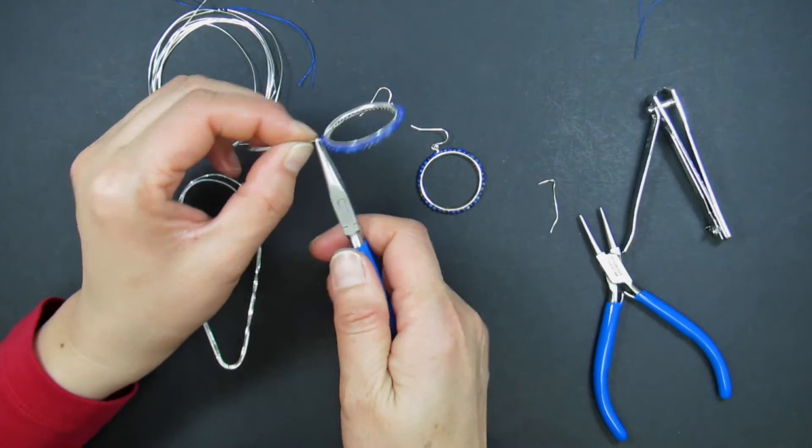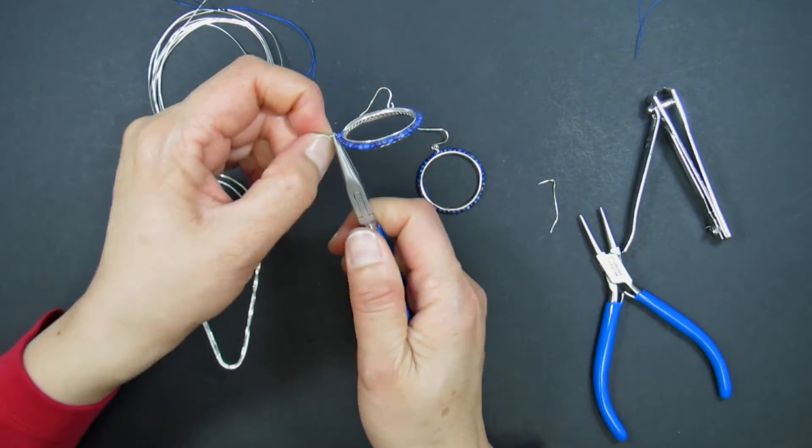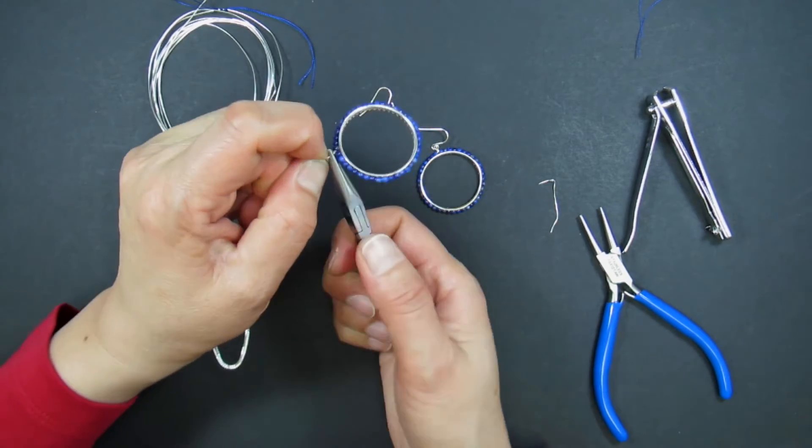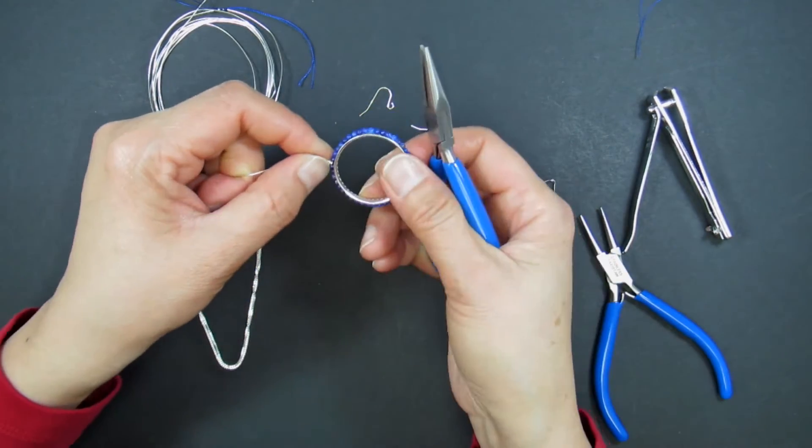To make sure that everything is flush and secure, hold the wire tightly in one hand and gently push the wrap down with your flat nose pliers.